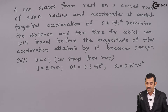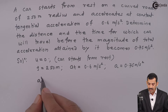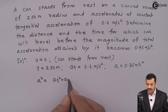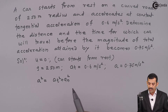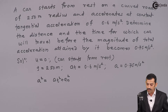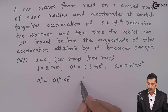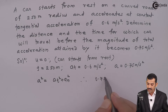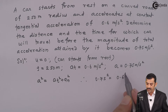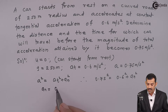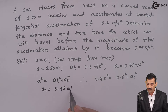The resultant acceleration A is always equal to the square root of AT squared plus AN squared, so A squared equals AT squared plus AN squared. We know AT is 0.6 and the resultant acceleration A is 0.75. Using the calculator, we can find the normal component of acceleration AN, which comes out to be 0.45 meters per second square.